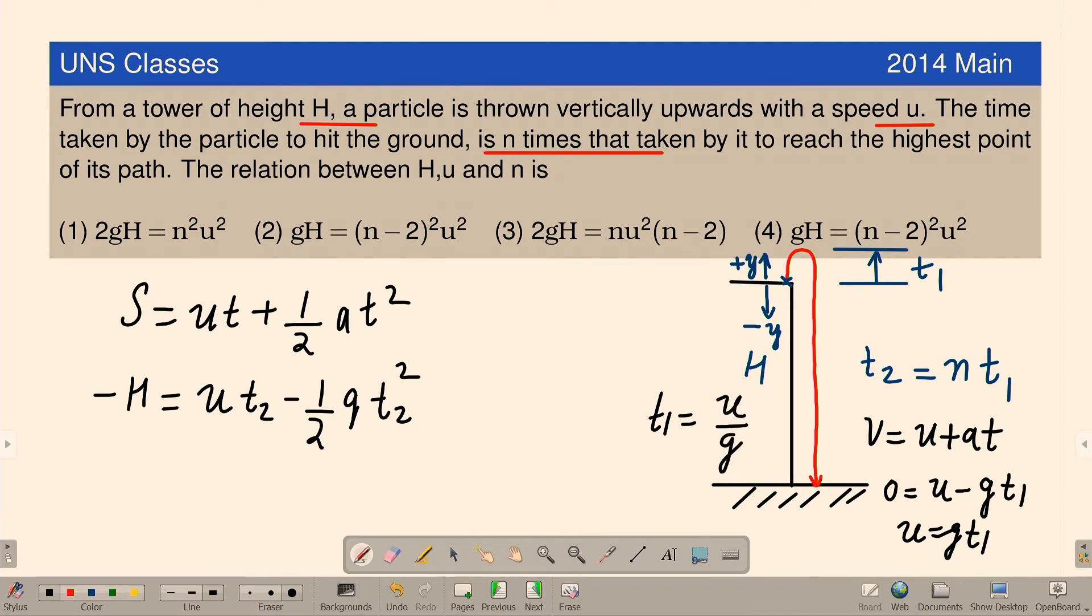And what is T2? T2 is N times T1. That means, T2 can be written as T2 is equal to N times U by G. Let us substitute that value in this expression and rearrange everything.